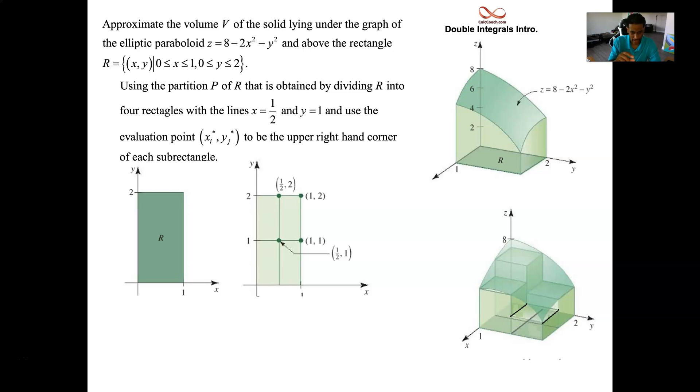We have the area of the rectangles called delta A, and the height of the rectangular prism is the function at that point. We have four different guys to add up. Delta A is in each one of them. What is delta A? It's the same, it doesn't change. It's delta x times delta y, the change in x and change in y. So it's half for x and one for y.